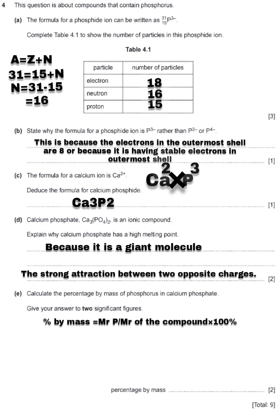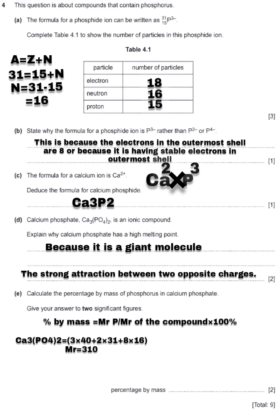We have three atoms of calcium: 3 multiplied by 40 (mass number of calcium). The two outside the brackets multiplies everything inside: so we have two moles of phosphorus multiplied by 31, plus two multiplied by four equals eight atoms of oxygen multiplied by 16. So the molar mass of calcium phosphate is 310.